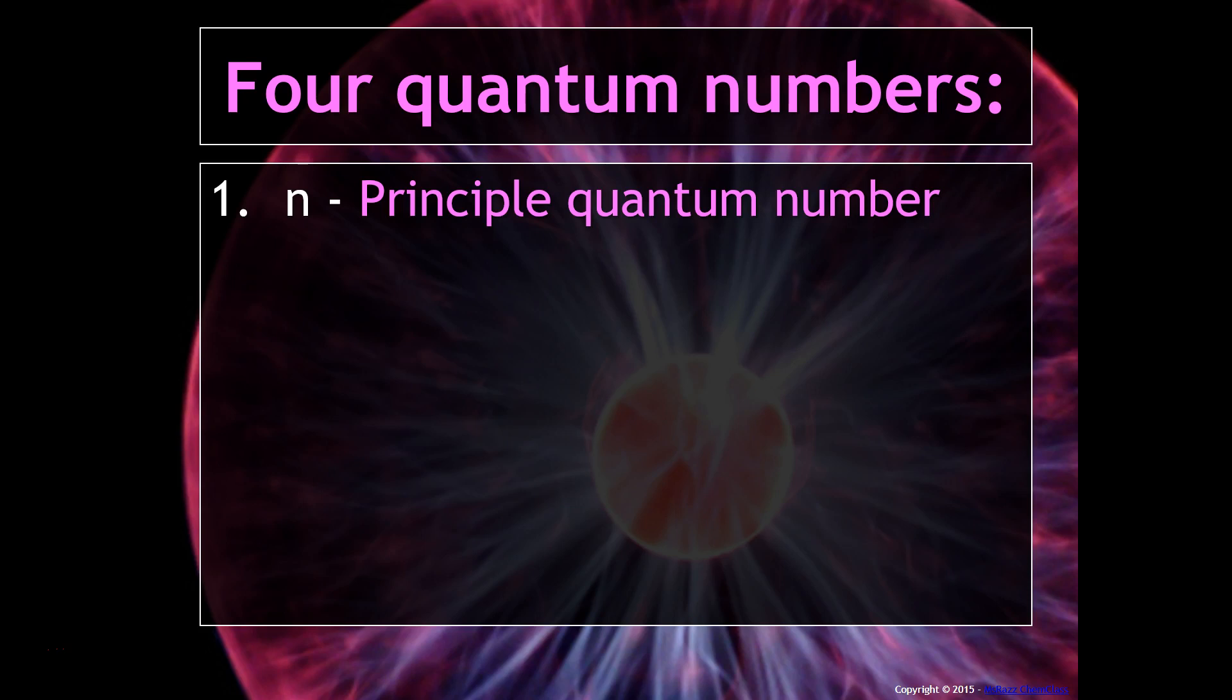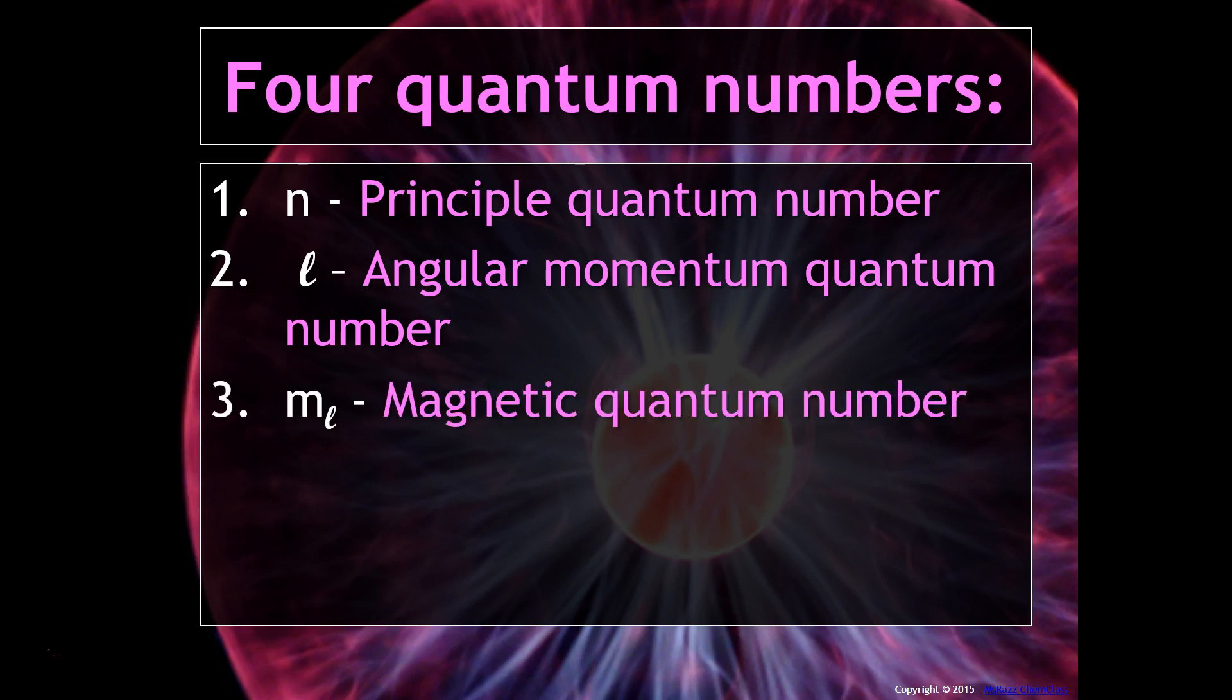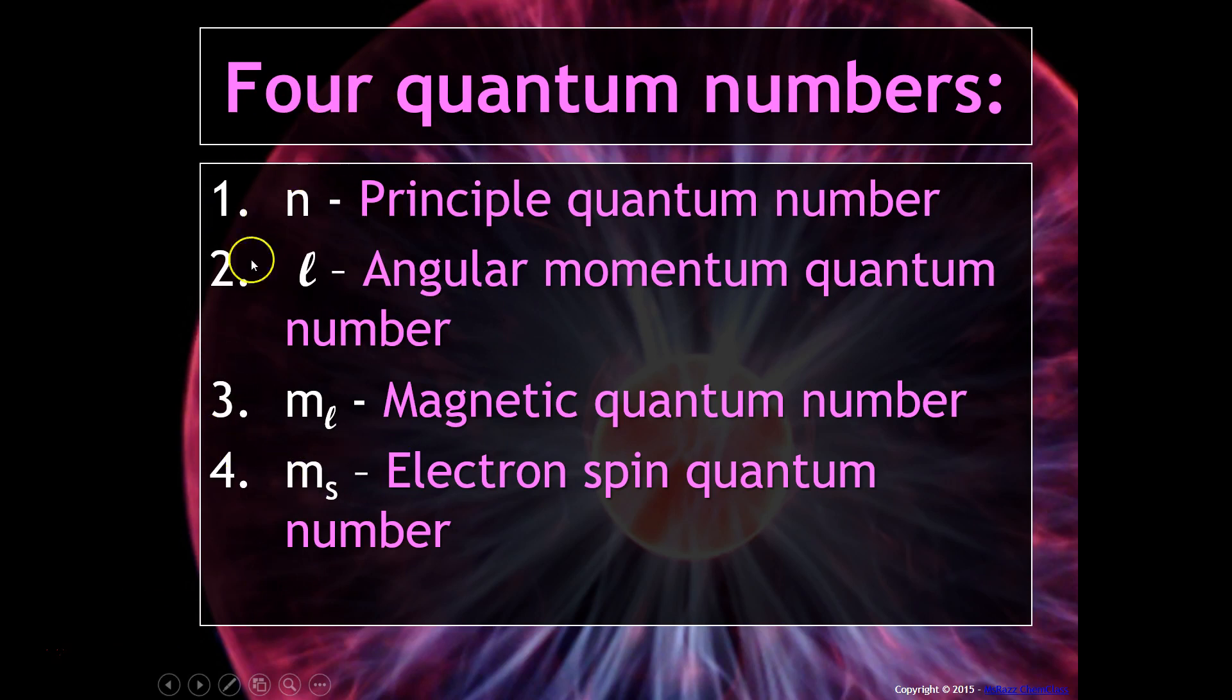The first is the principal quantum number. The second is the angular momentum quantum number. The third is the magnetic quantum number. And the fourth is the electron spin quantum number. They all have these symbols that you see right here. We will now look at these in detail.